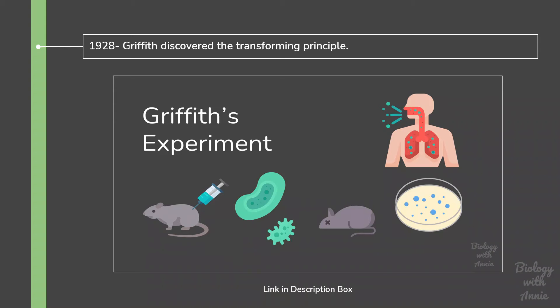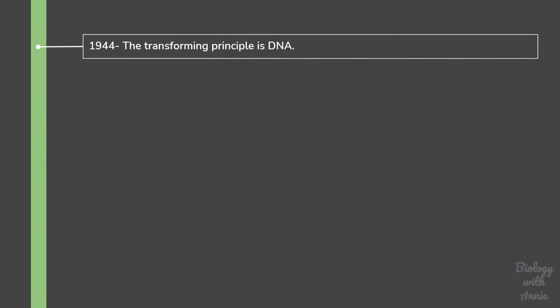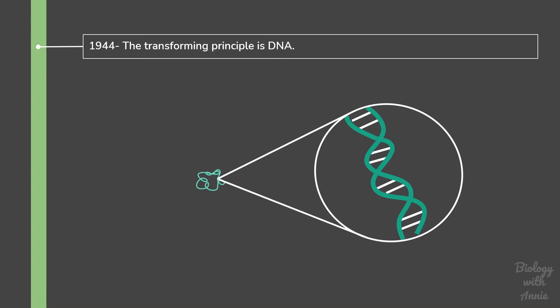Unfortunately, Griffith was not able to identify the chemical nature of the transforming principle. So Oswald Avery and his team continued Griffith's experiment, and in 1944 they identified DNA as the transforming principle and hence proved that DNA is the genetic material.